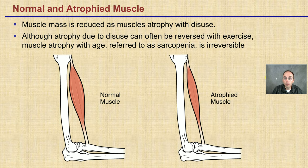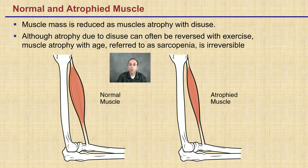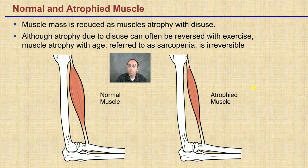Normal versus atrophied muscles — if you have an accident and put an arm or leg in a cast, that can lead to an atrophied muscle, which is reduced muscle mass simply from disuse. Although atrophy due to disuse can often be reversed with exercise and physical therapy, muscle atrophy with age, referred to as sarcopenia, is irreversible. As you get older, your muscles overall will simply atrophy as a product of age.